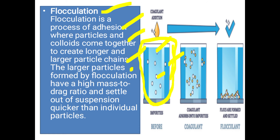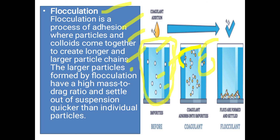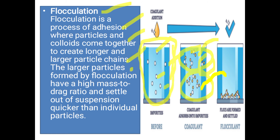Suppose water is placed in a tank containing suspended solids. In flocculation, we add a flocculant — also called a coagulant. These flocculants collide with the water particles through a process of adhesion. They attach to each other and form larger particles. As a result, these larger particles have a high mass-to-charge ratio and settle down to the bottom.